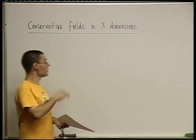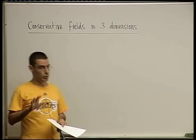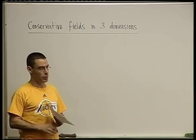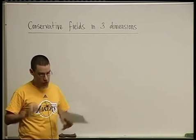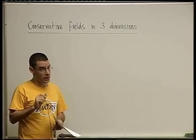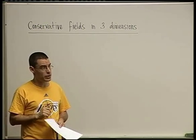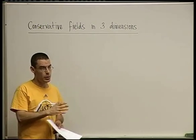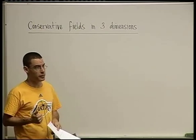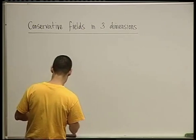Our discussion of conservative fields in three dimensions is going to boil down to one theorem that says the following four conditions are equivalent. Just like in two dimensions, one of the conditions — the last one — is going to look a bit different, because in two dimensions it was qx equals py. That doesn't make sense for a field that has three components p, q, and r. So let's see what it's going to be replaced by.